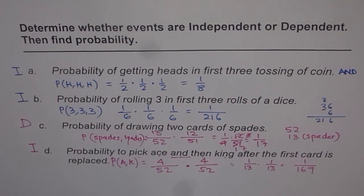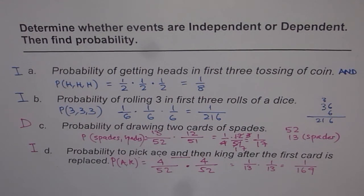I hope with this example you understand what is an independent event and what is a dependent event, and you are ready to look into more questions on compound events and finding probability in such compound events.